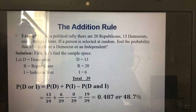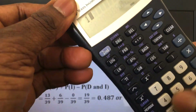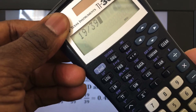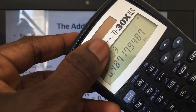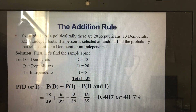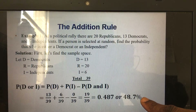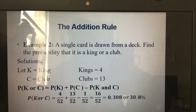Some people ask how to put this on a calculator. You type 19 divided by 39 and press equals — you can see it gives 0.487, which is 48.7% chance that the person selected is either a Democrat or an Independent.